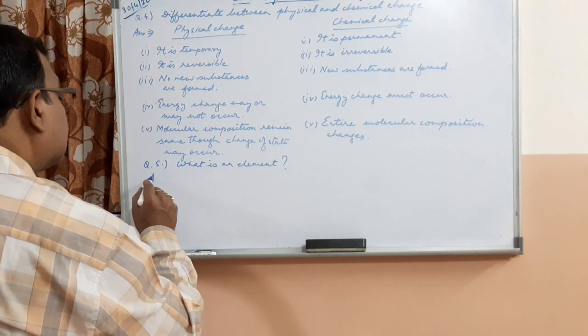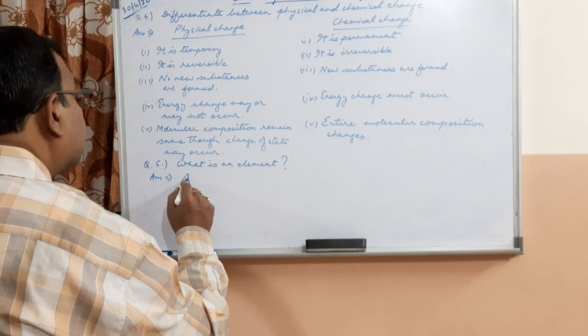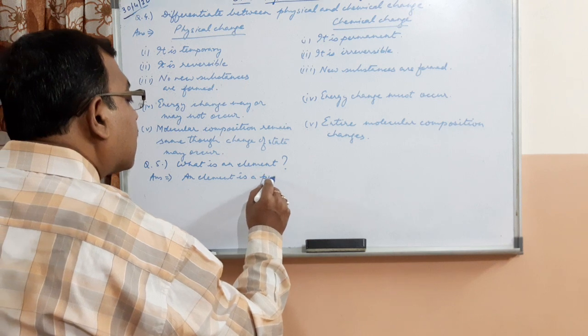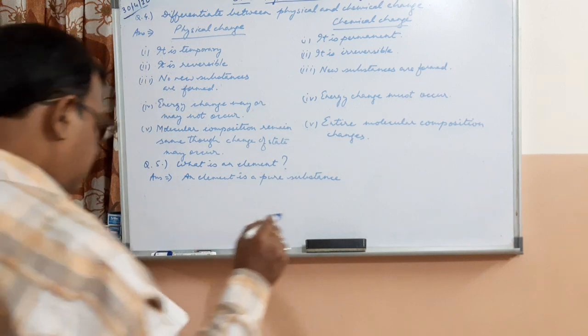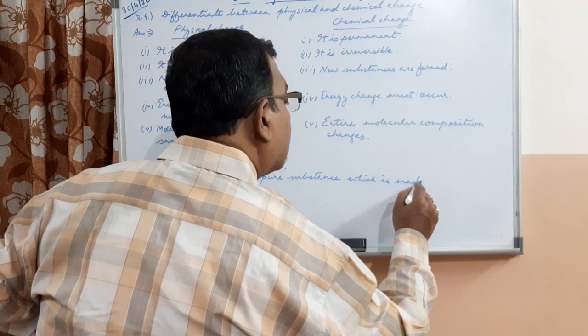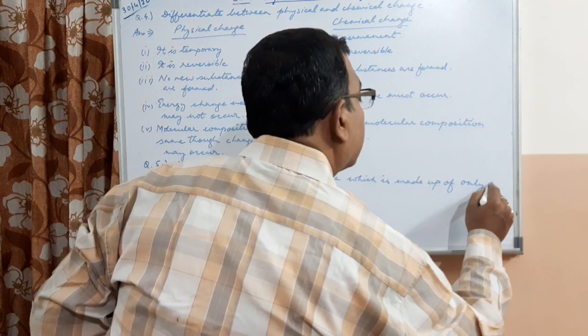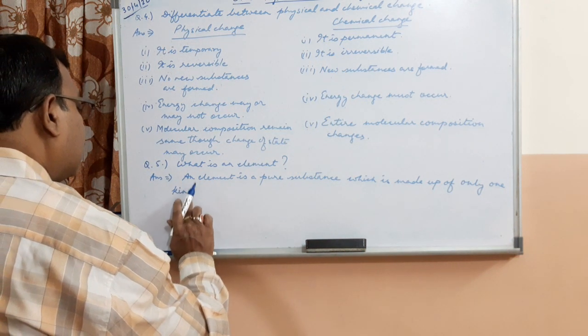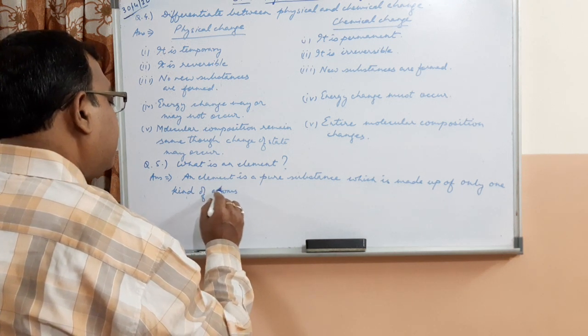Next question number 5. An element is a pure substance which is made up of only one kind of atoms.